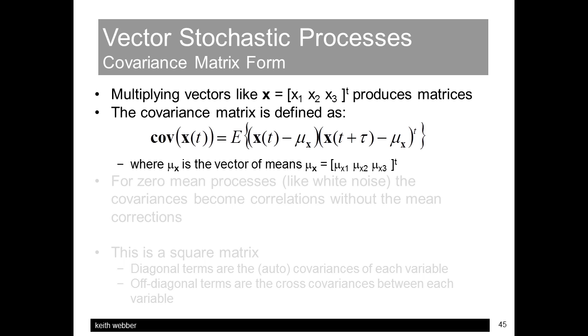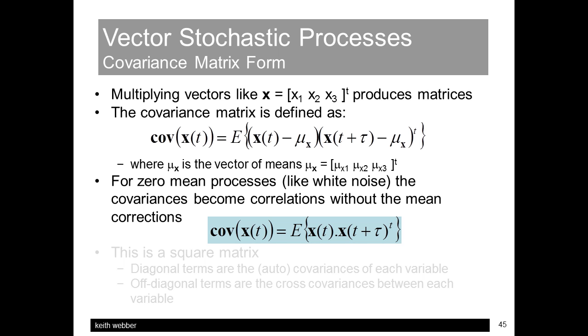However, if we now have vectors of signals, multiplication results in a matrix, in this case the infamous covariance matrix. It's also convenient to deal with zero-mean processes. For the robot case, this can be done by taking the error between the actual and estimated positions, for example. And the covariance matrix then takes this form.